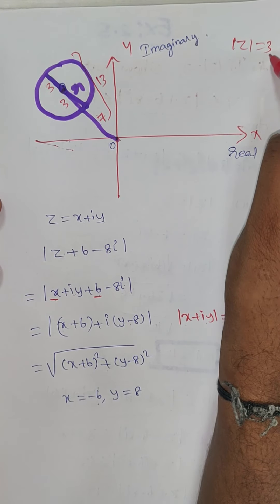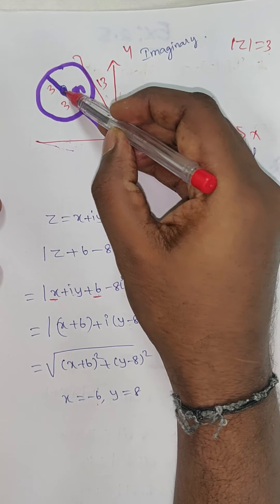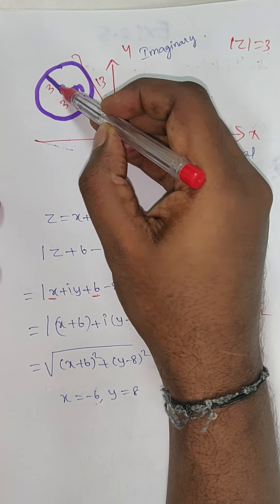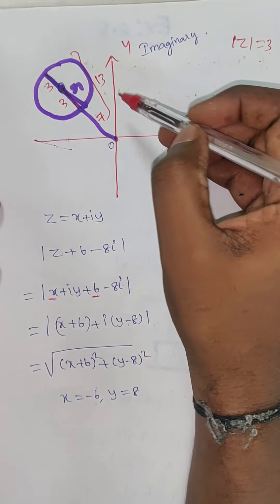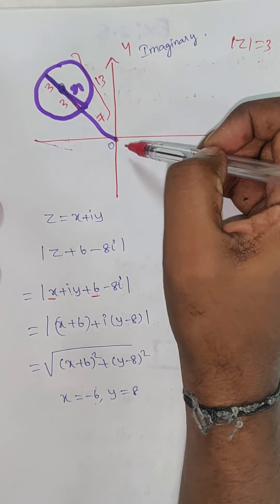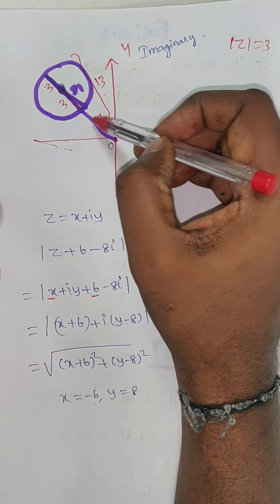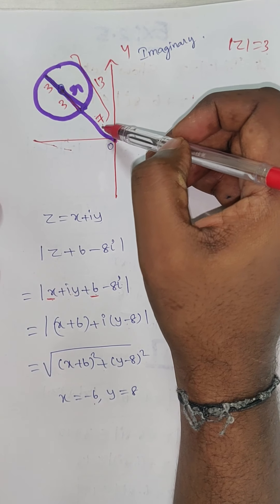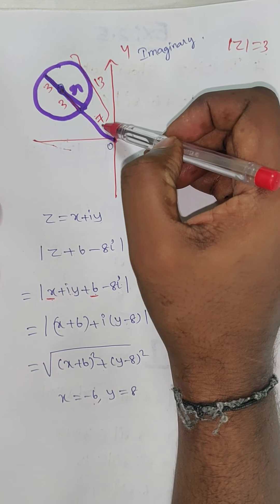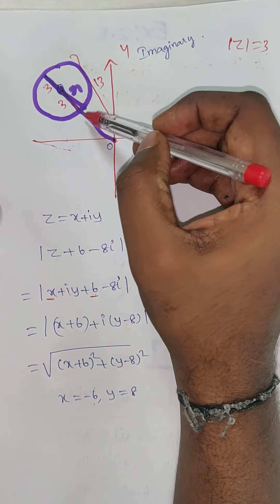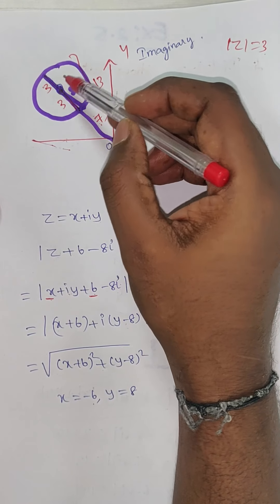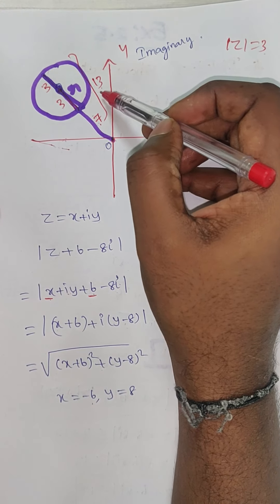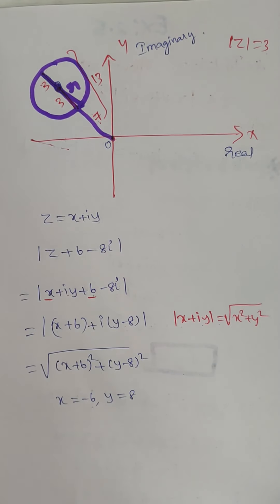The radius is mod of z equal to 3, so the radius is 3 on each side. The distance from the origin to the center of this circle is 7, as given in the question. So the total maximum distance is 7 plus 3 plus 3 equals 13. This is the geometric proof of the equation. Thank you.